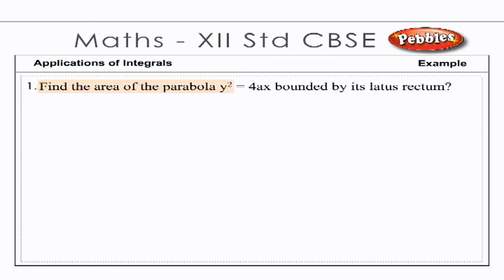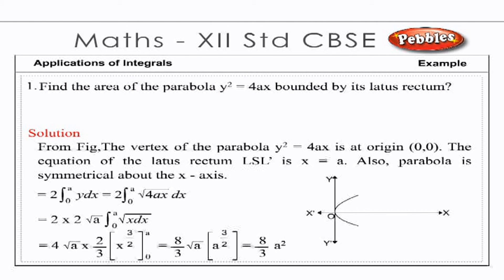Find the area of the parabola y² = 4ax bounded by its latus rectum. Solution: From the figure, the vertex of the parabola y² = 4ax is the origin O(0, 0). The equation of the latus rectum LL' is x = a. Also, the parabola is symmetrical about the x-axis. The required area of the region OLL'O equals 2 × area of region OLS = 2 ∫₀ᵃ y dx = 2 ∫₀ᵃ √(4ax) dx = 2 × 2√a ∫₀ᵃ √x dx. Substituting values and simplifying, the required area equals 8a²/3.